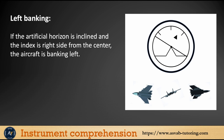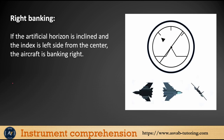Left banking: if the index is on the right side, that means the aircraft is banking left. Right banking: if the artificial horizon is inclined and the index is on the left side of center, that means the aircraft is banking right.